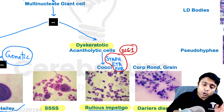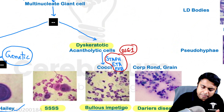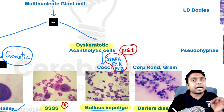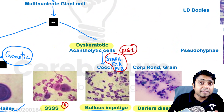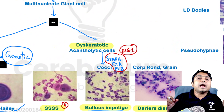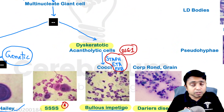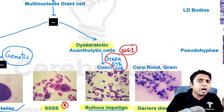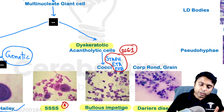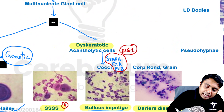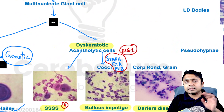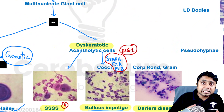Whereas in staphylococcal scalded skin syndrome (SSSS), children present with generalized erythema and sheet-like epidermal peeling. If you perform a Tzanck smear, we are going to see dyskeratotic acantholytic cells in these children as well. That is the Tzanck smear finding in SSSS.